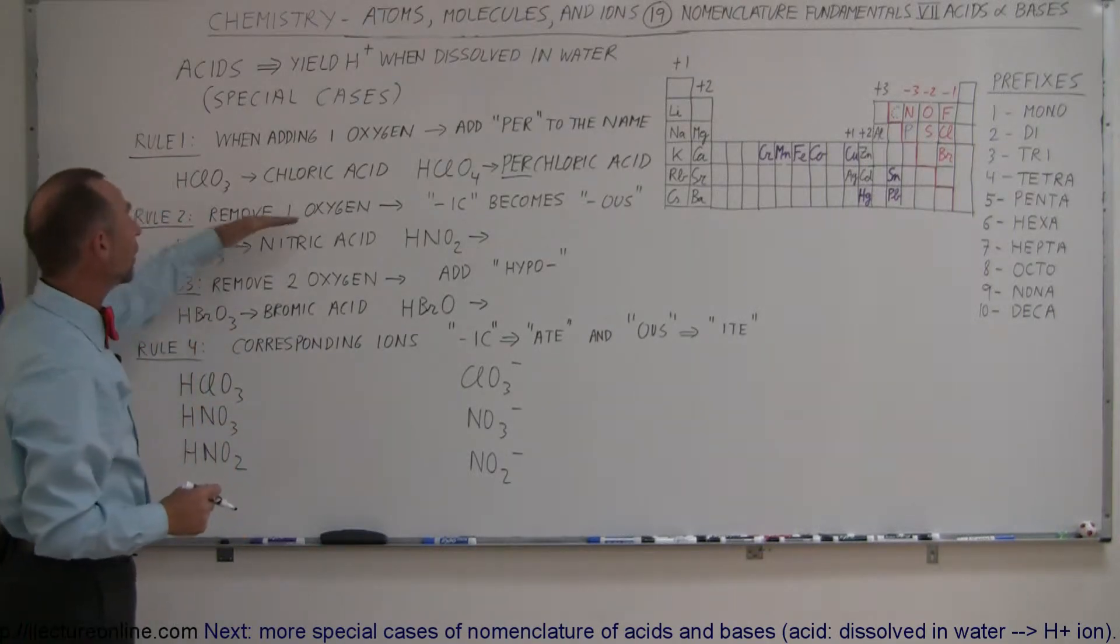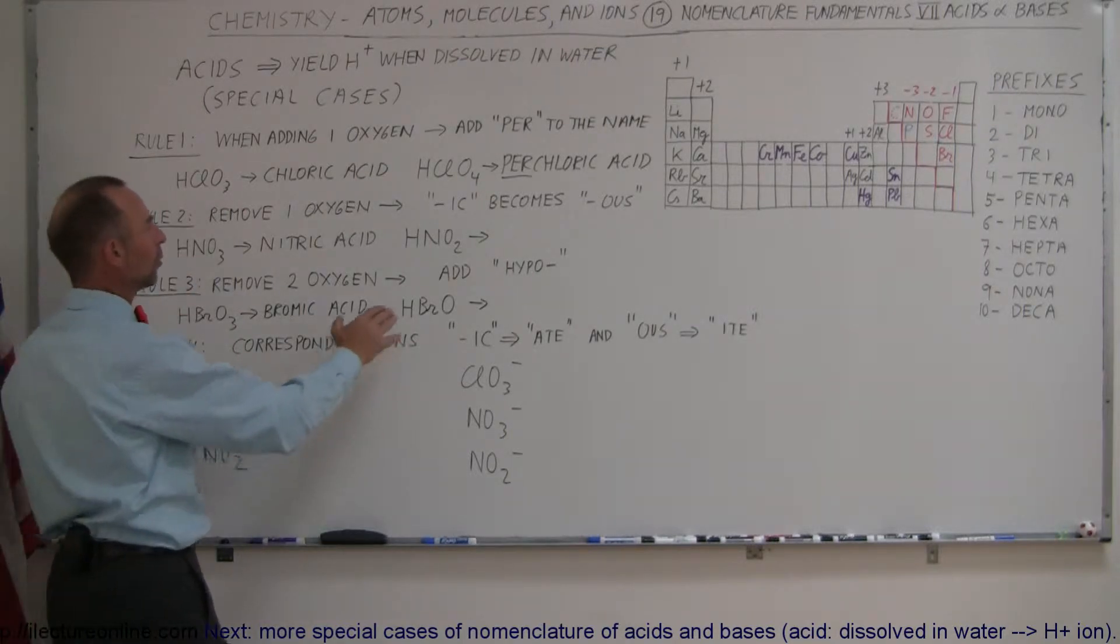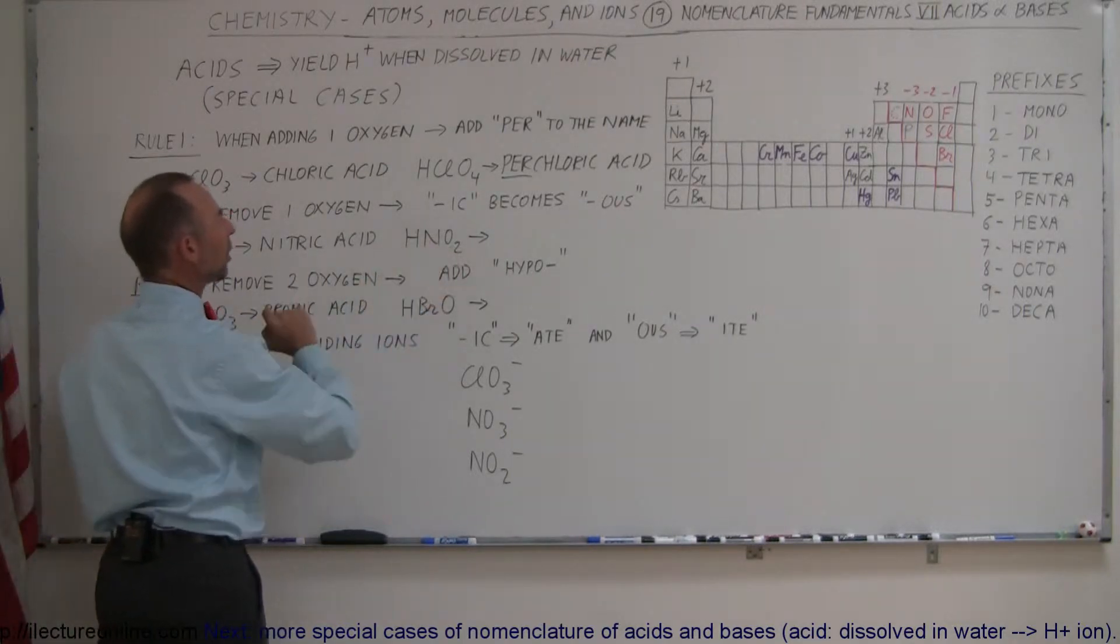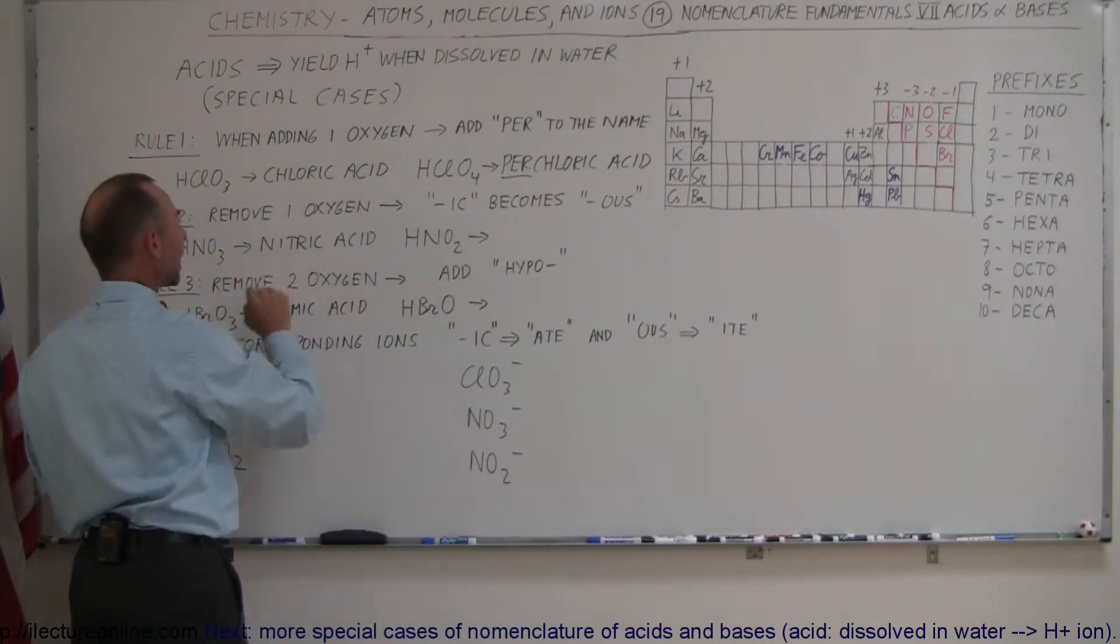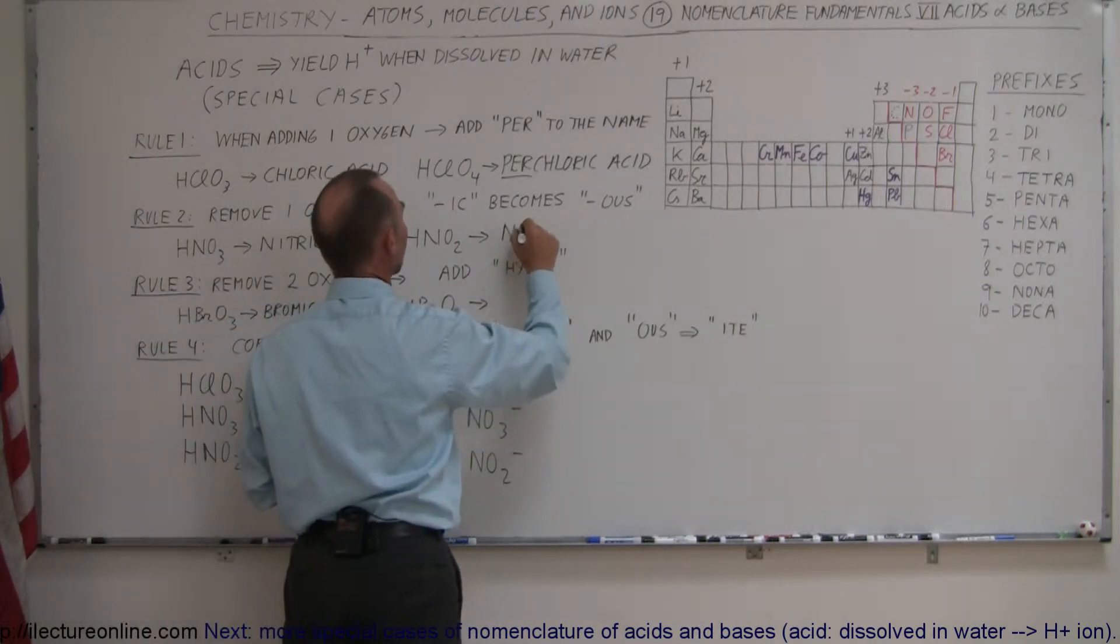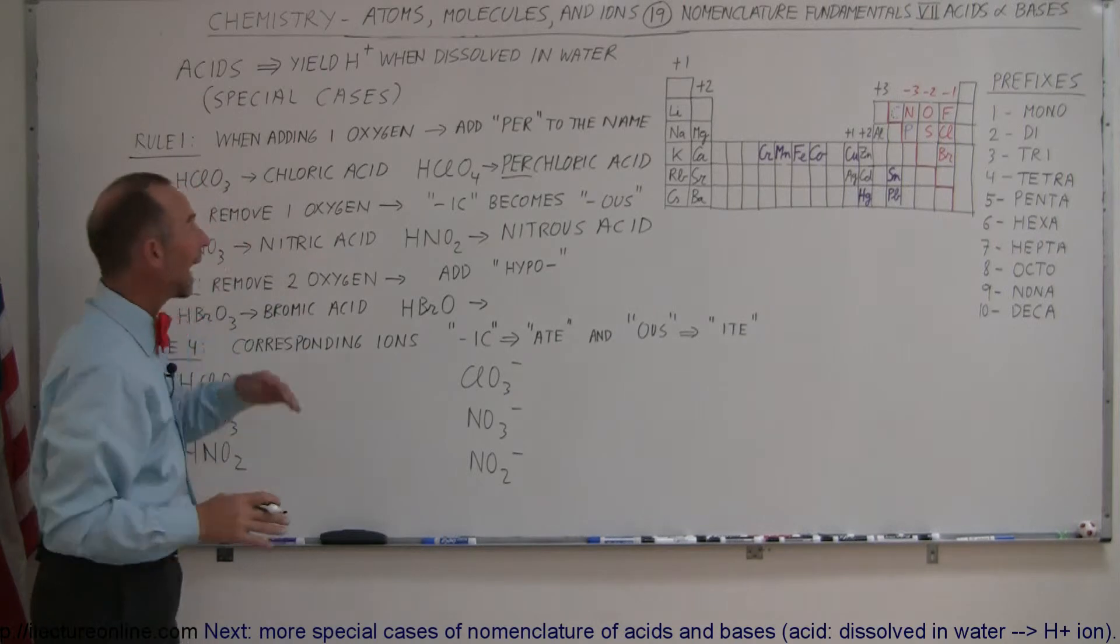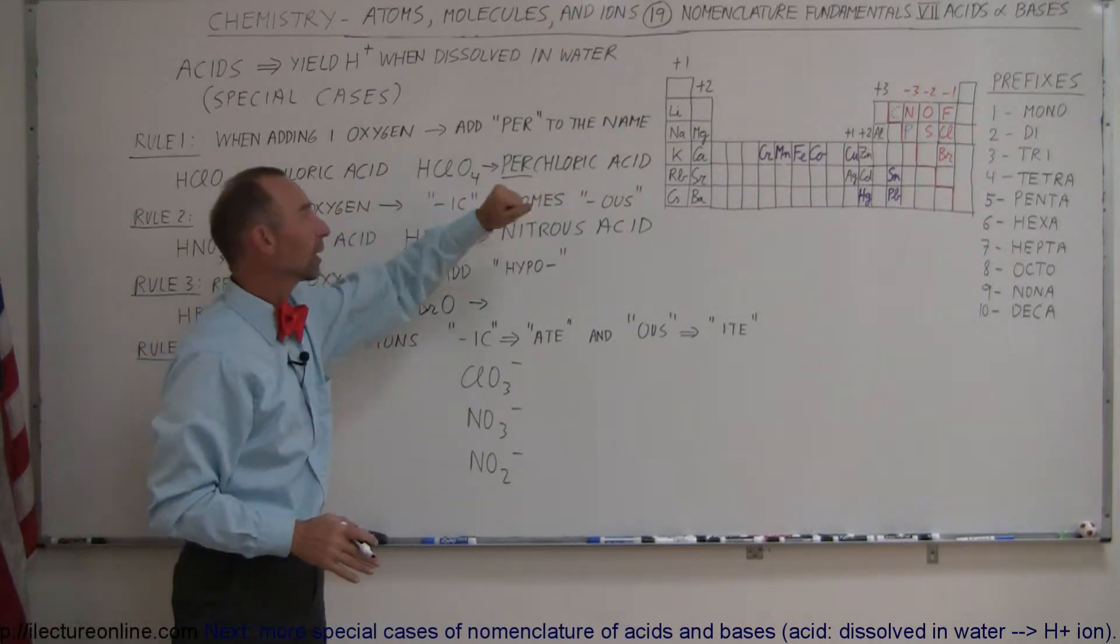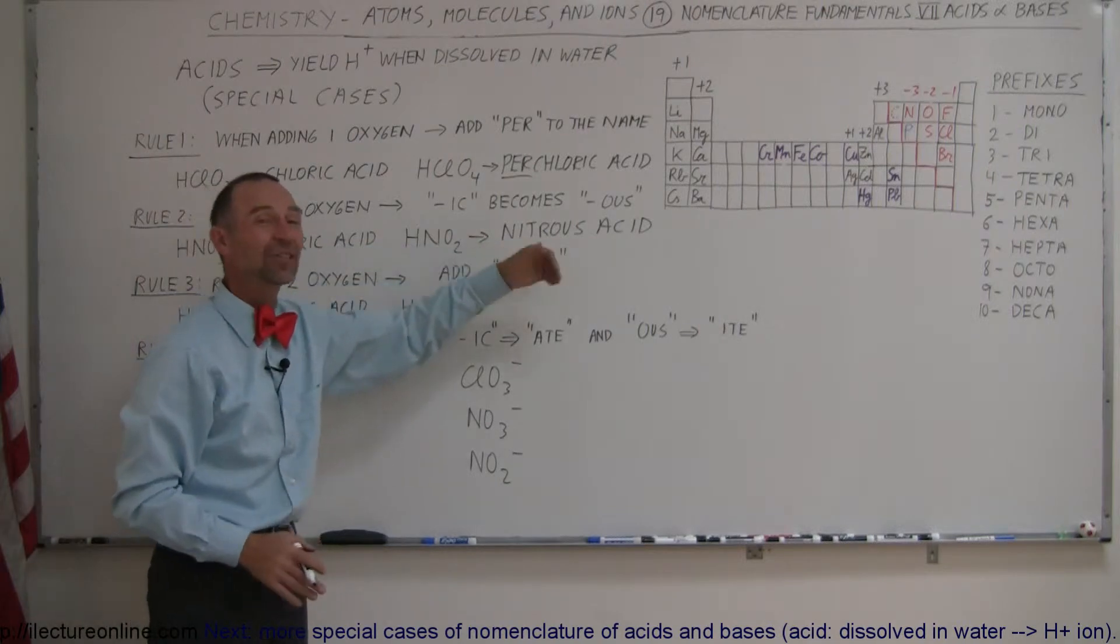What if we remove an oxygen? For example, let's say we have nitric acid, HNO3, but now we have a different acid, which is HNO2. What do we call that? Well, the rule says that the -ic now becomes -ous. So instead of nitric acid, we're going to call it nitrous acid. So when we add an oxygen, it's called perchloric acid. When we remove one, we call it nitrous instead of nitric acid.